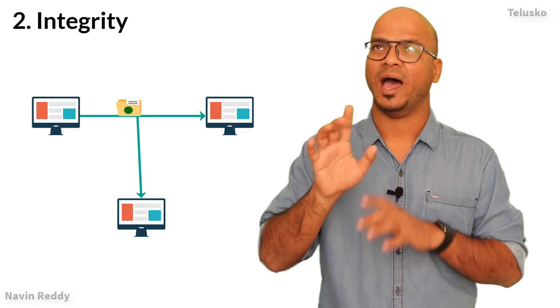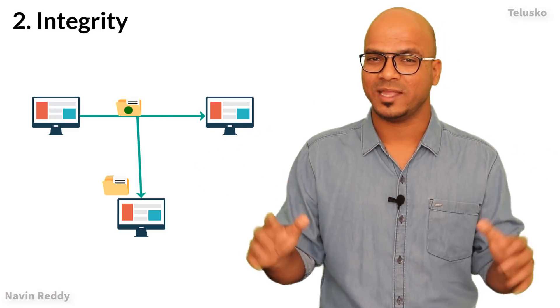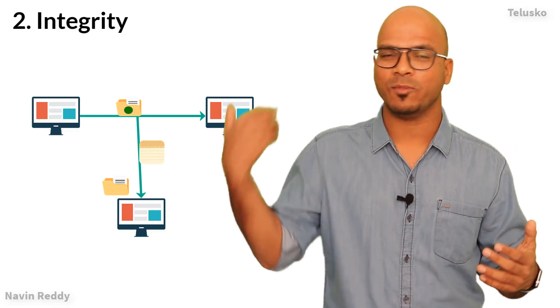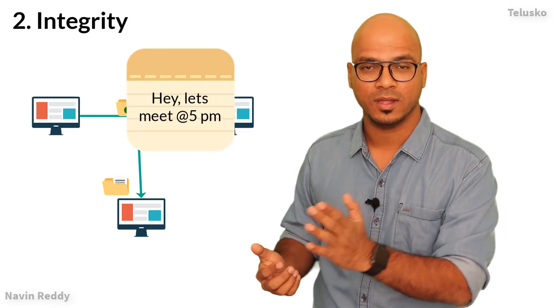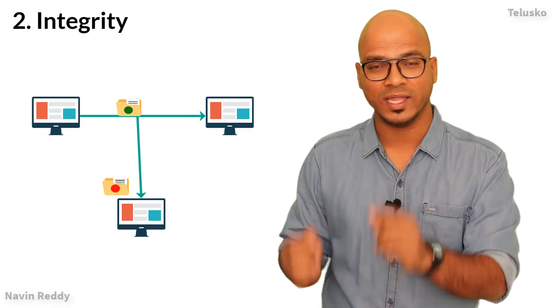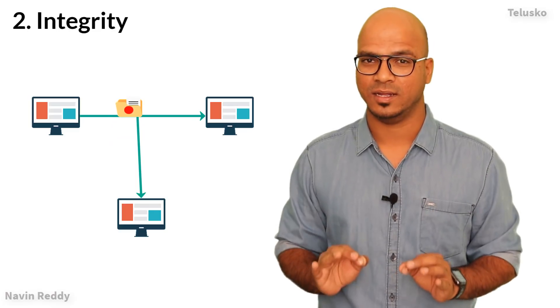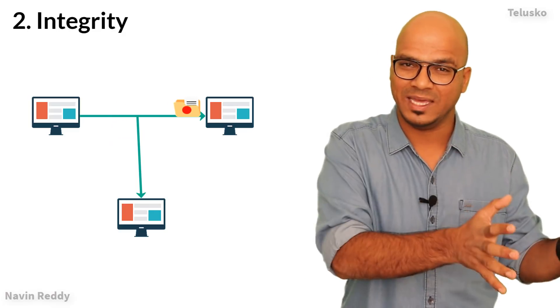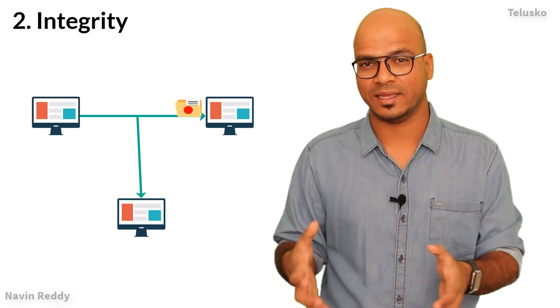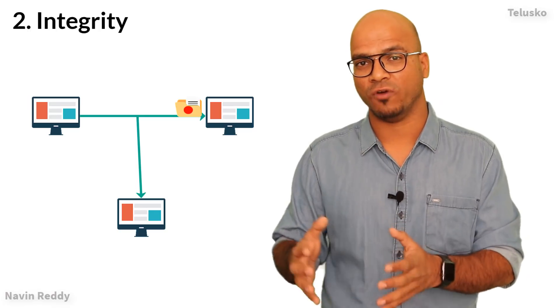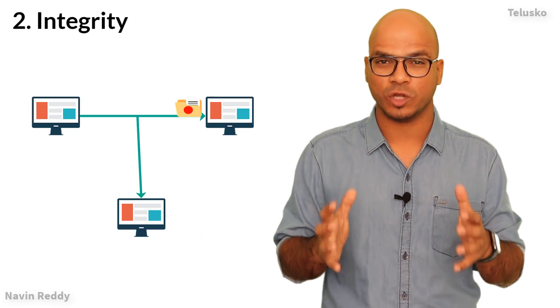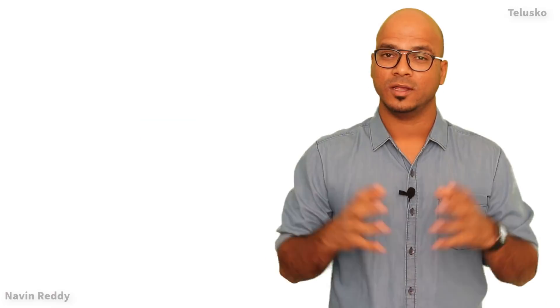But let's say C comes in between and says 'hey, I've read the message, but I also want to modify it.' C modifies the data by saying 'hey let's meet at 5 PM'. That's where the problem starts. Someone in between is changing my data, so the data received by B is different from what A is sending. That's where we have an issue of integrity - we don't want our data to be modified on the network.